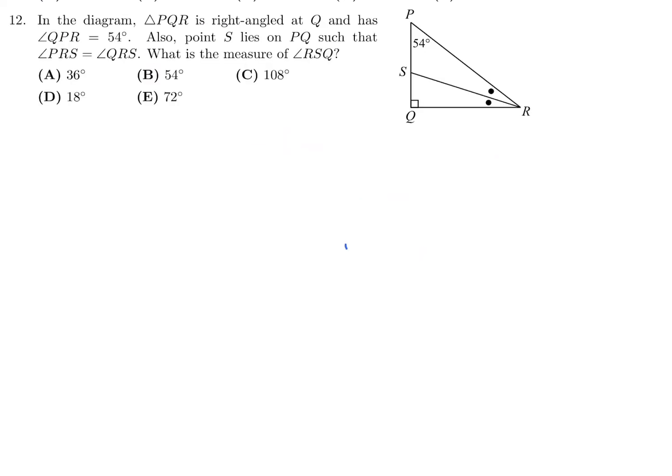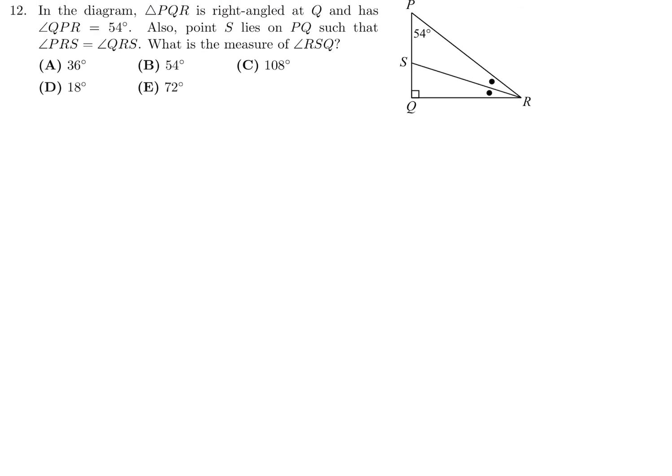In the diagram, PQR is right-angled at Q and has angle QPR as 54. Also, S lies on PQ such that angle PRS equals angle QRS. What is the measure of RSQ? Well, we can easily figure out angle PRQ. That plus 54 plus 90 is equal to 180.